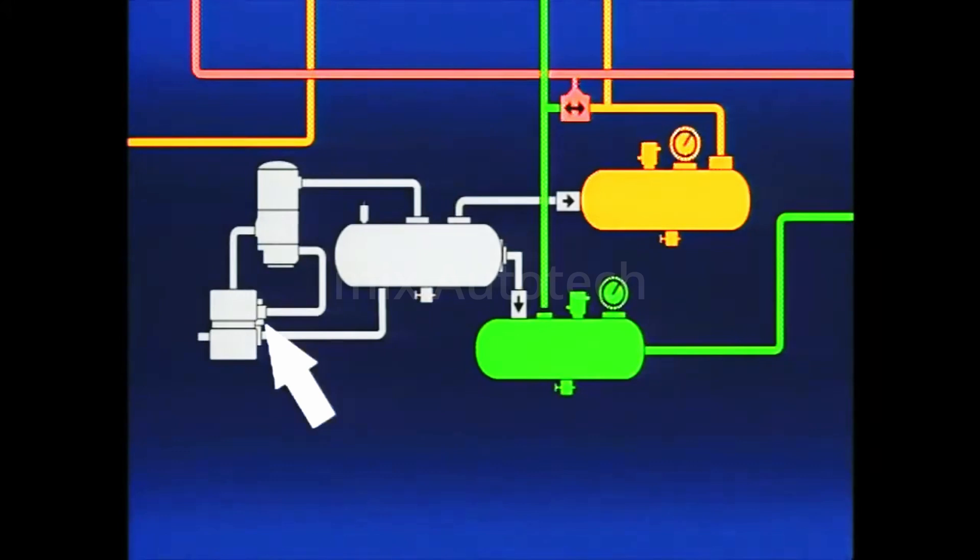The same signal of air from the governor which causes the compressor to unload also starts the air dryer purge cycle.